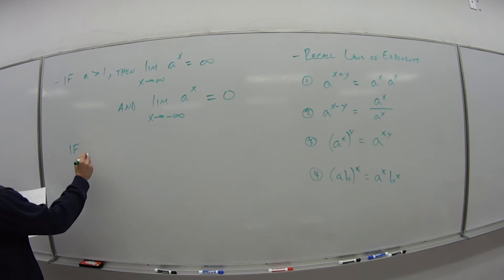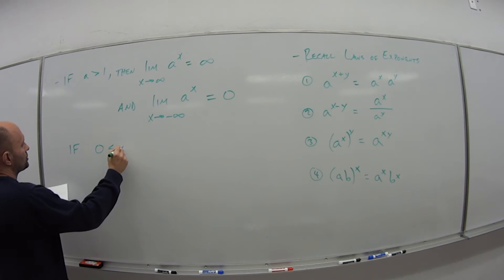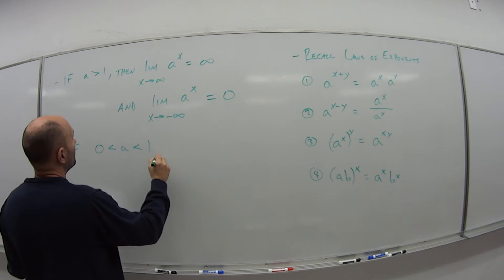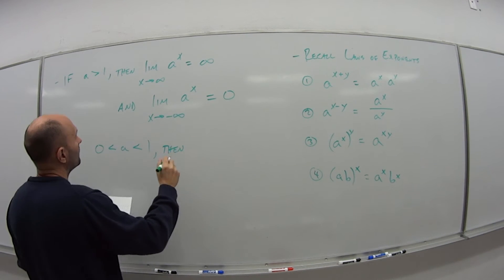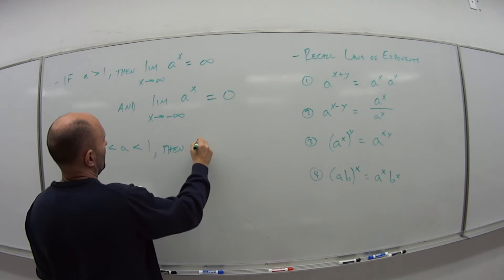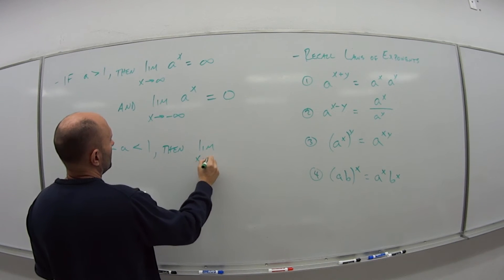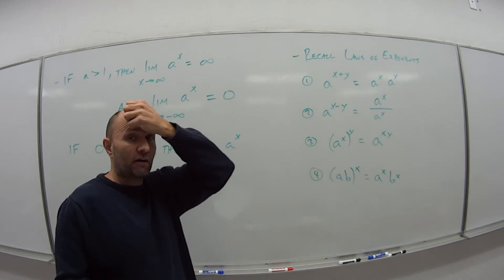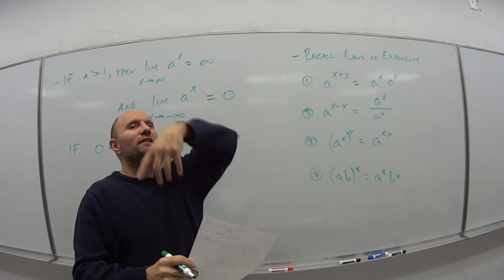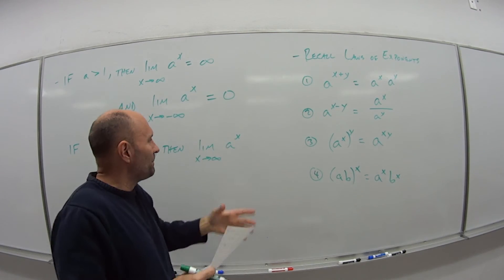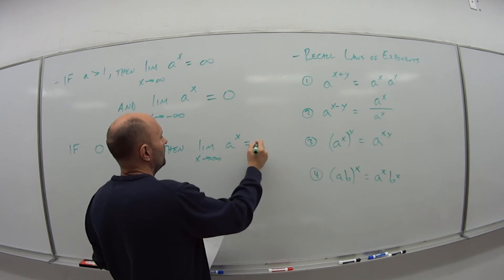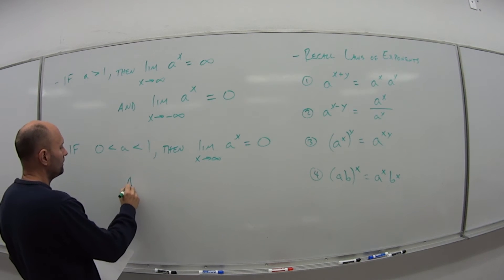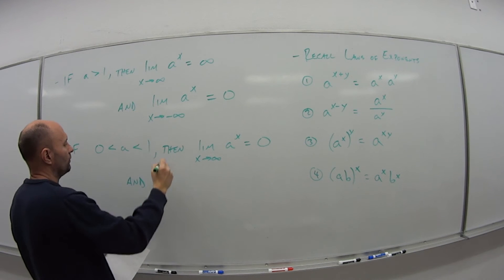And I also have that if a is a fraction, positive fraction between 0 and 1, then they basically just switch on us. So the limit as x goes to infinity of a to the x. So let's say it's 1 half. So 1 half to the infinity power, well, that becomes real, real, real small, which is what? We say that it approaches 0.